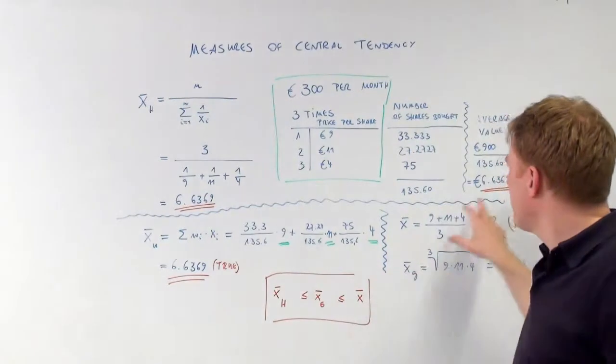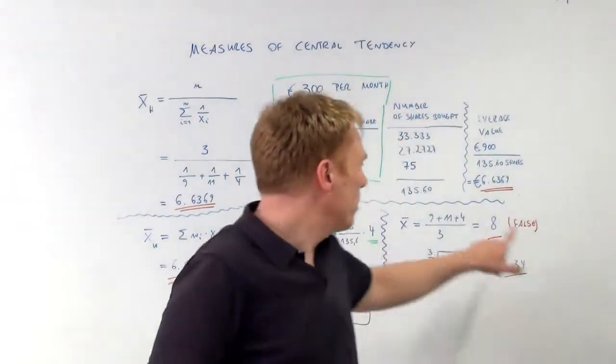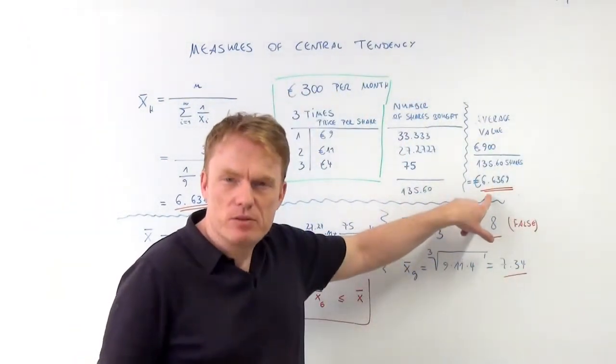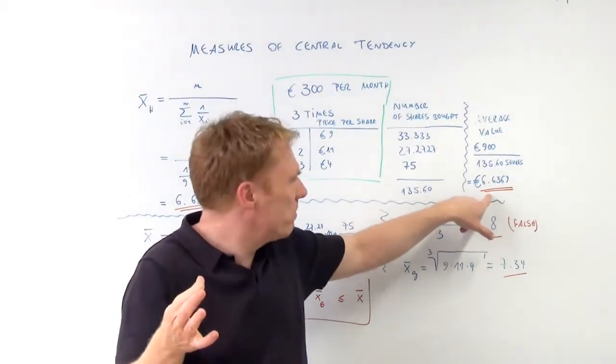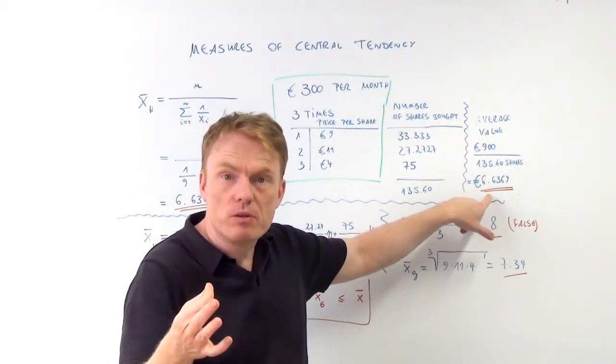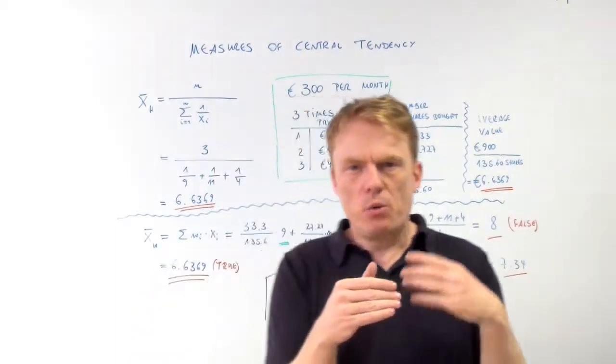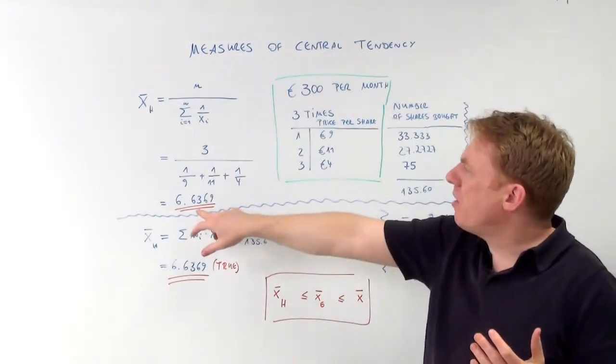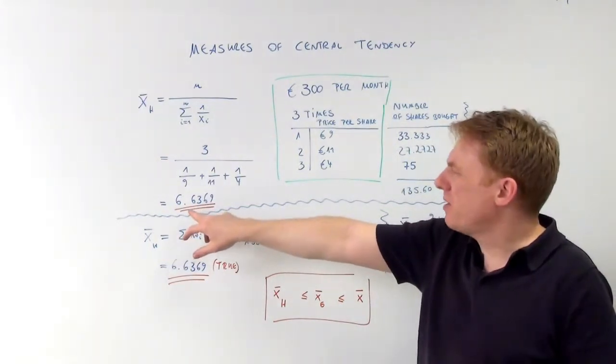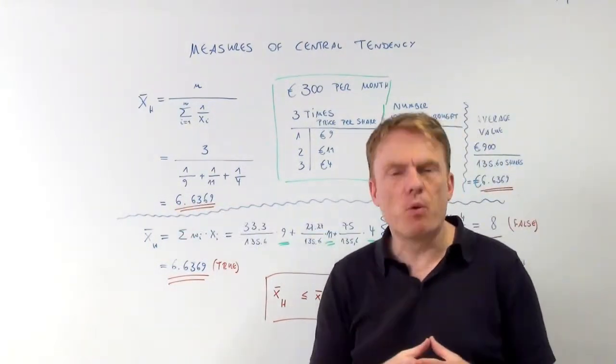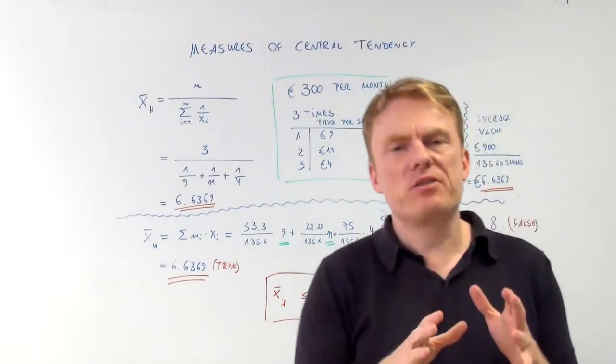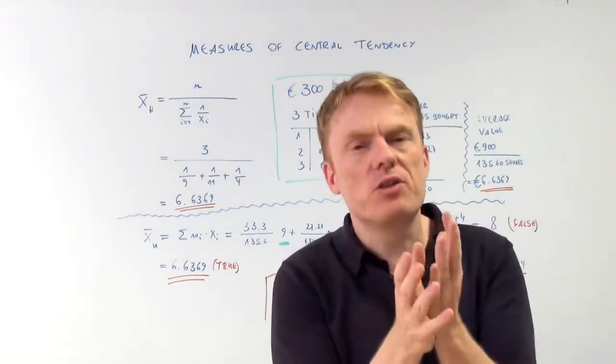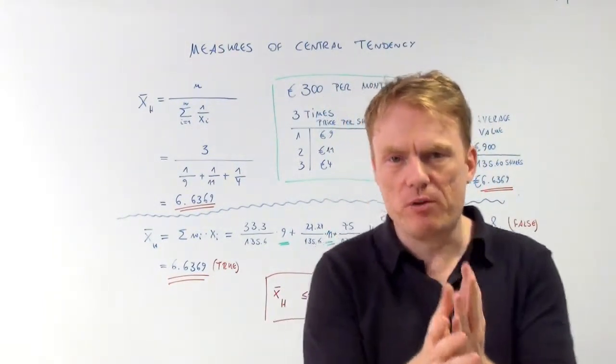Which means that we have an average value, an average price per share of 6.64 euros per share. We could also have calculated this value using the harmonic mean this way. So 6.64 is the right and correct answer to the question: what is the average price per share?